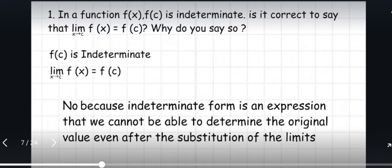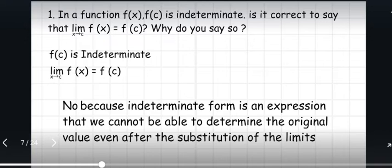Because indeterminate form is an expression that we cannot determine the original value even after the substitution of the limits. What this means is that the value of f(c) cannot be known or determined based solely on the value of c. Even if c has a certain value, the limit of f(x) as x approaches c may still exist even if f(c) is indeterminate. The limit value may be a finite number, an infinite number, or it may not exist at all.